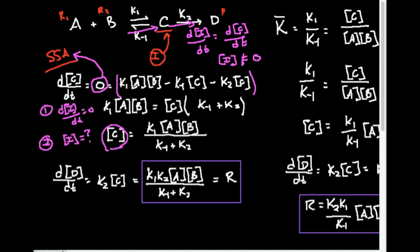These two negative terms can be moved to the other side, giving K1[A][B] = [C](K-minus-1 + K2), where I've factored out [C]. Now I can solve for [C] by dividing both sides by (K-minus-1 + K2). That gives the concentration of C equal to K1 times [A] times [B], divided by (K-minus-1 + K2).